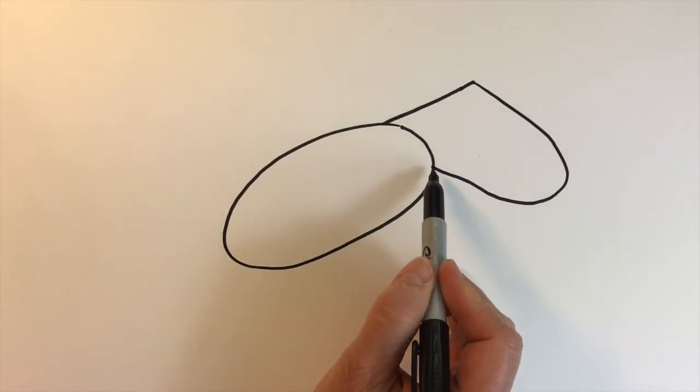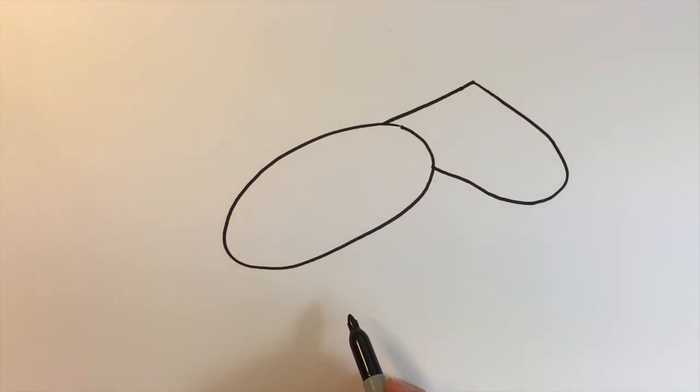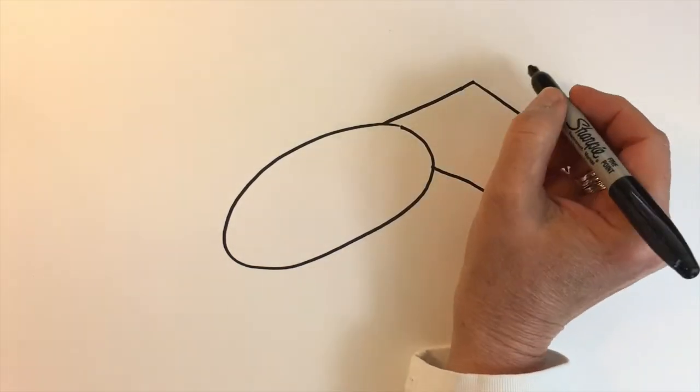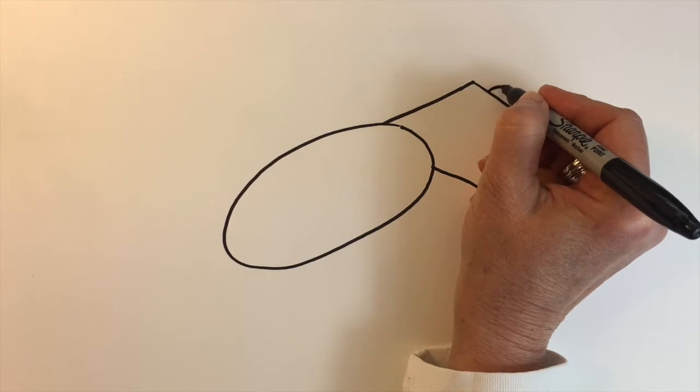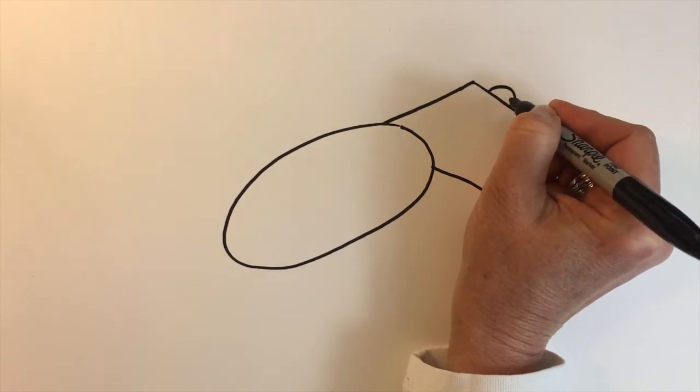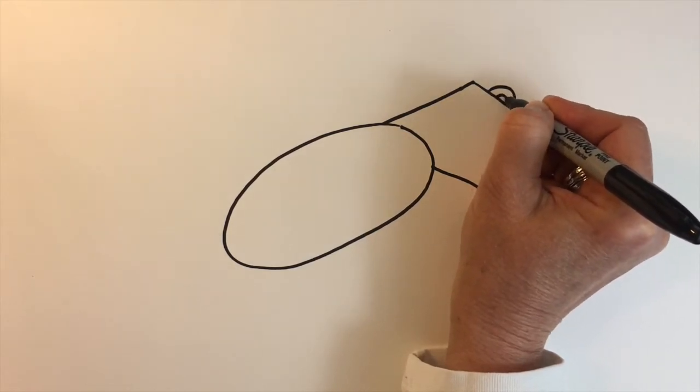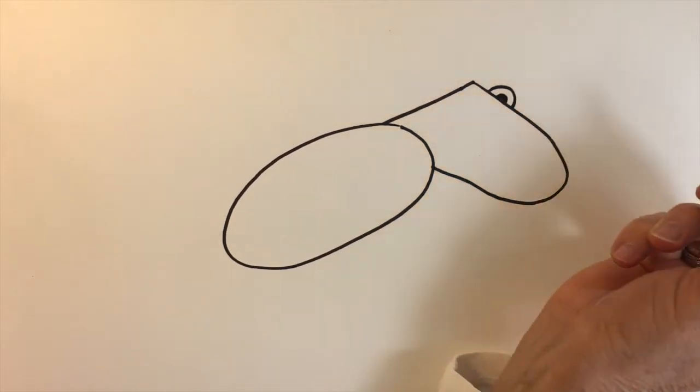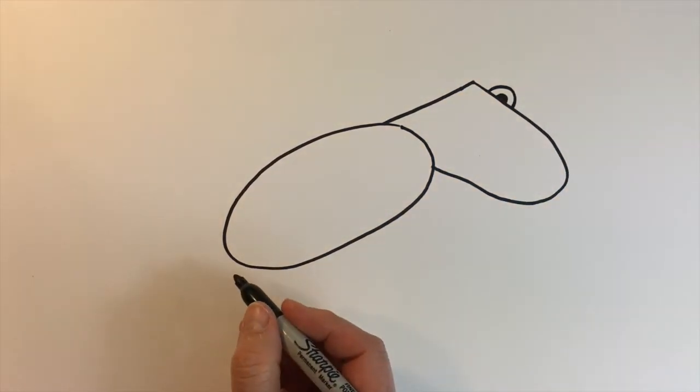See how it ends right up there at the top of that oval. His eye will be a wide arch or upside-down U, and I'll put another one right inside there and fill it in.